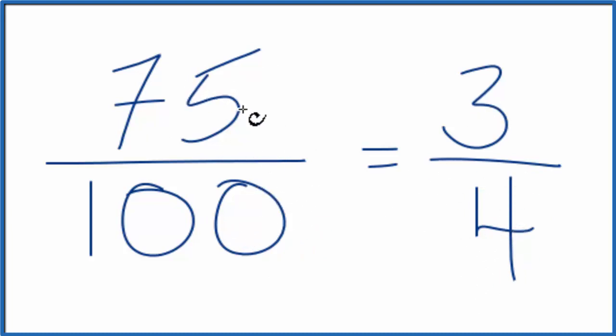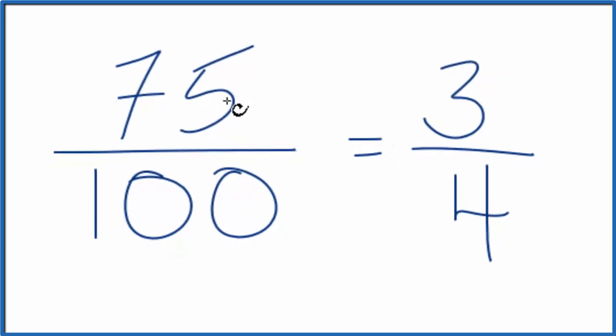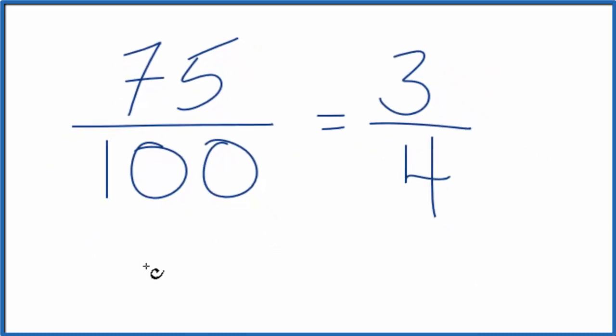If we took 75 over 100 and divided 75 by 100, we would get 0.75. If we took 3 and divided it by 4, we get 0.75.